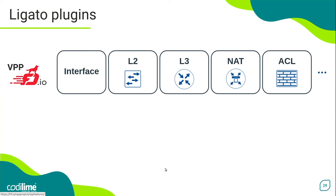As well as interface-specific parameters. The multifunctional L3 plugin allows you to configure ARP Entries, ARP Proxy, L3 Routes, Cross-Connects, IP Neighbor Scanning, VRFs, and VRRP. Another example is the NAT plugin, which supports configuration of NAT44, including more advanced options such as static mapping and load balancing for DNAT mode.